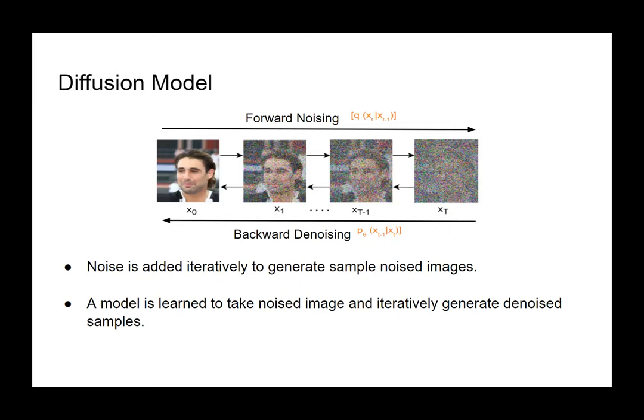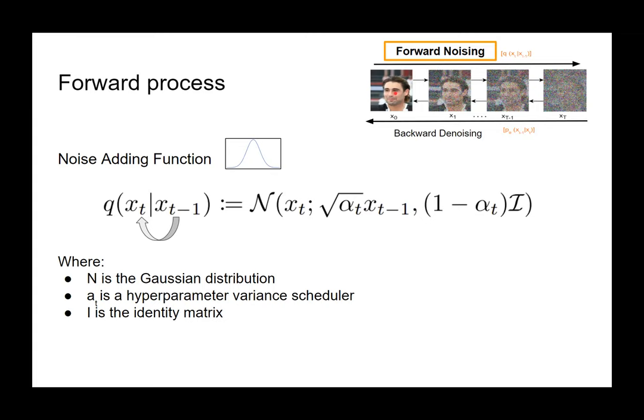Let's have a quick overview of diffusion models. As Dr. Shah illustrated in previous classes, there are two processes: the forward process and the backward process. In the forward process, we successively add noise to the original image until it becomes complete noise, generating samples based on a Gaussian distribution — given x_{t-1}, we generate x_t.